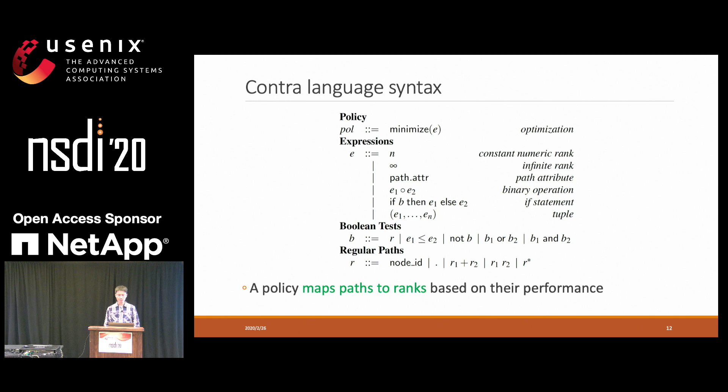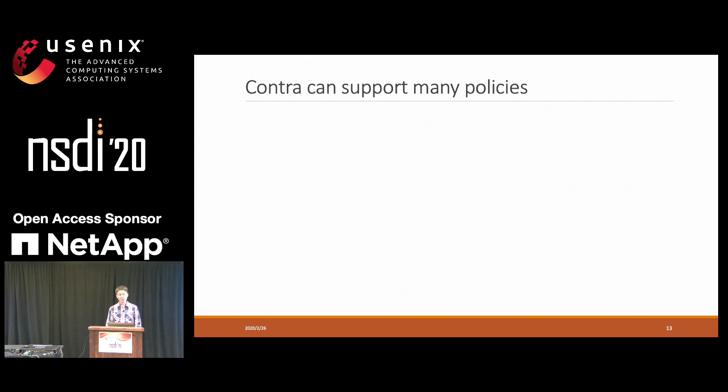In the Contra language, there are two important components. One is the path constraint, where users can use regular expressions to specify types of paths. Second is the performance metric. In this example, the user uses path utilization to implement load balancing. Here is the language syntax of Contra. A policy actually maps paths to ranks based on their performance metric. With this language, Contra can support many useful policies. For example, a user can simply write path.len to specify a shortest path policy, or path.util to specify a least-utilized path policy.